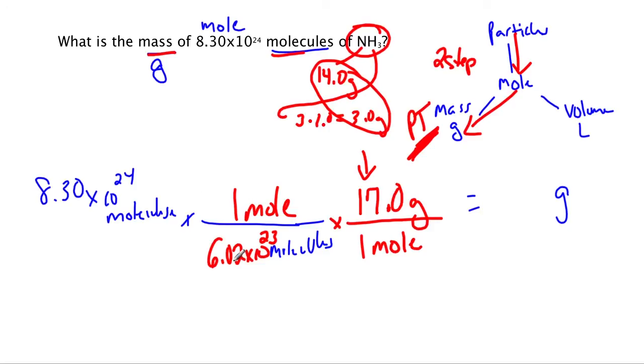All right, so this times 1 divided by that times 17 divided by 1 equals, and whatever you get, is the mass of that many particles.